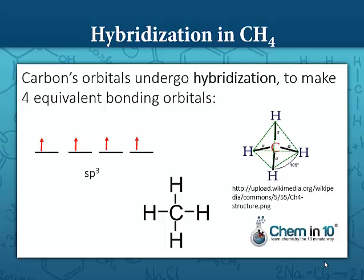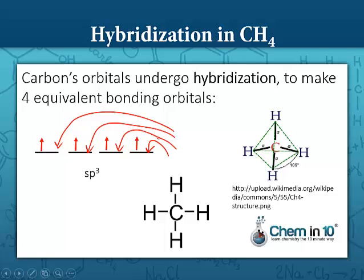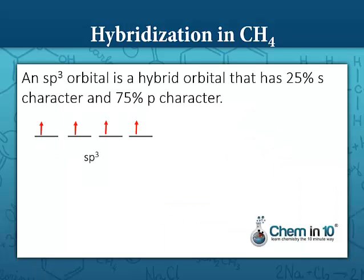So now carbon can form four equivalent bonds with the four hydrogens — a hydrogen can bond here, here, here, and here. Sp3 refers to the fact that one s orbital and three p orbitals hybridize together to form four equivalent orbitals that have a 25% s character and a 75% p character.